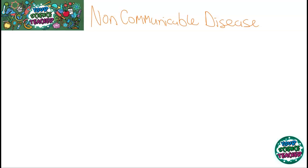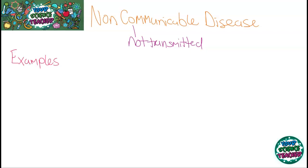A non-communicable disease is a disease that is not transmitted from person to person. It is either contracted through a person's lifetime or someone is born with a genetic disease. Non-communicable diseases account for 71% of all deaths worldwide, which is a lot larger than the amount of deaths from communicable diseases.